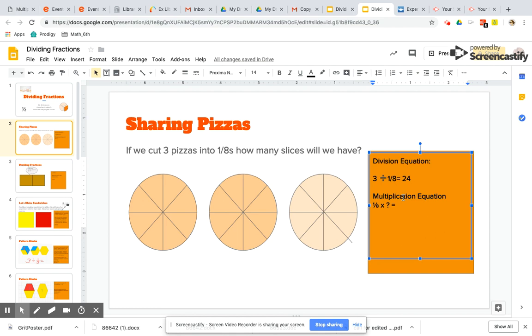So now that we have our answer of 24, which is our quotient, we're going to go and check our work with a multiplication equation. And this helps us make connections. So again, our divisor was one eighth. We divided one eighth into our dividend of three.